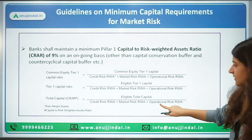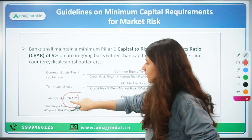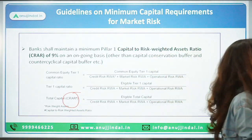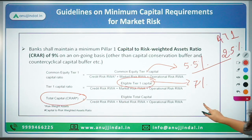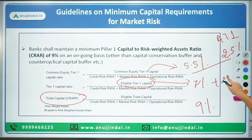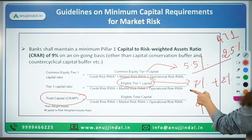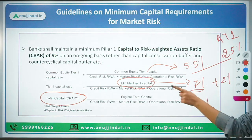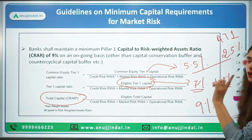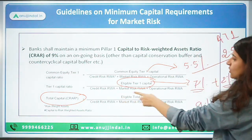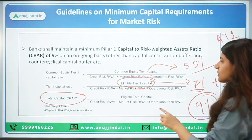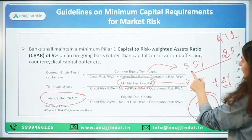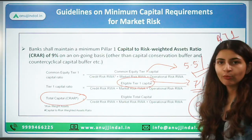The CRAR that was supposed to be maintained was 9%. Tier 1 is 7% — further divided into CET1 at 5.5% and Additional Tier 1 at 2.5%. Tier 2 is 2%, so the total capital to risk-weighted asset ratio is 9%.